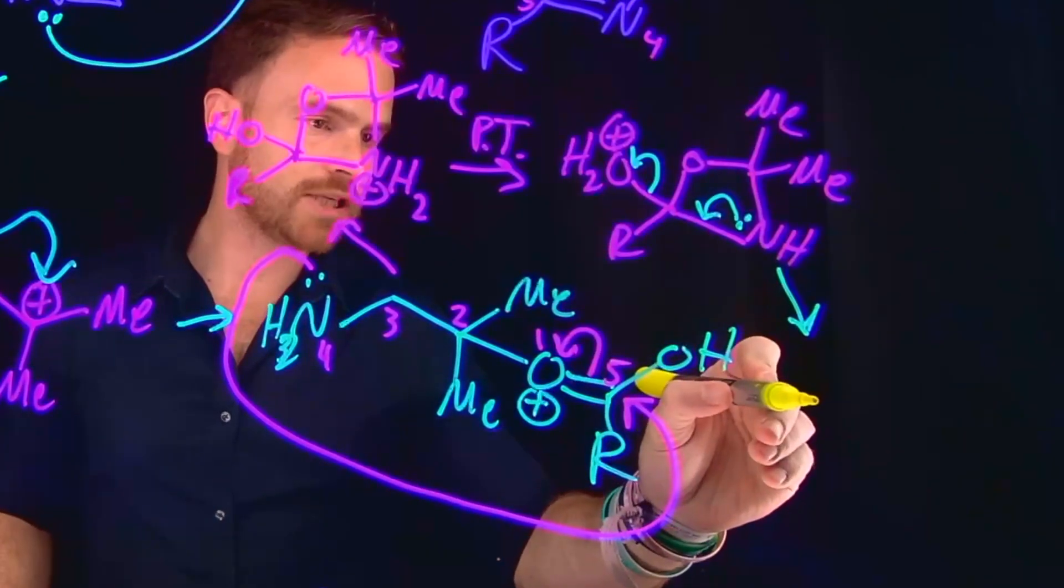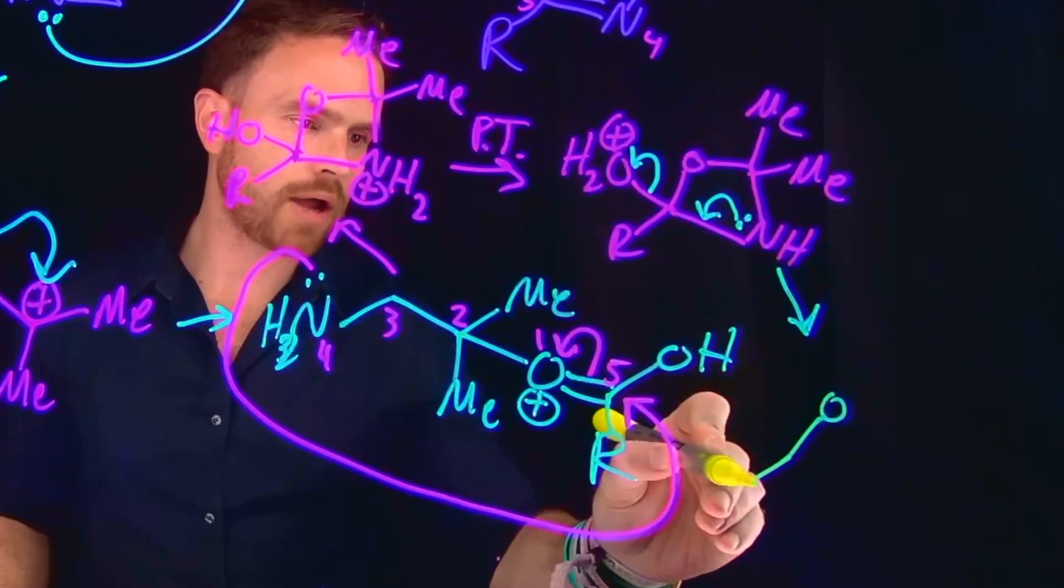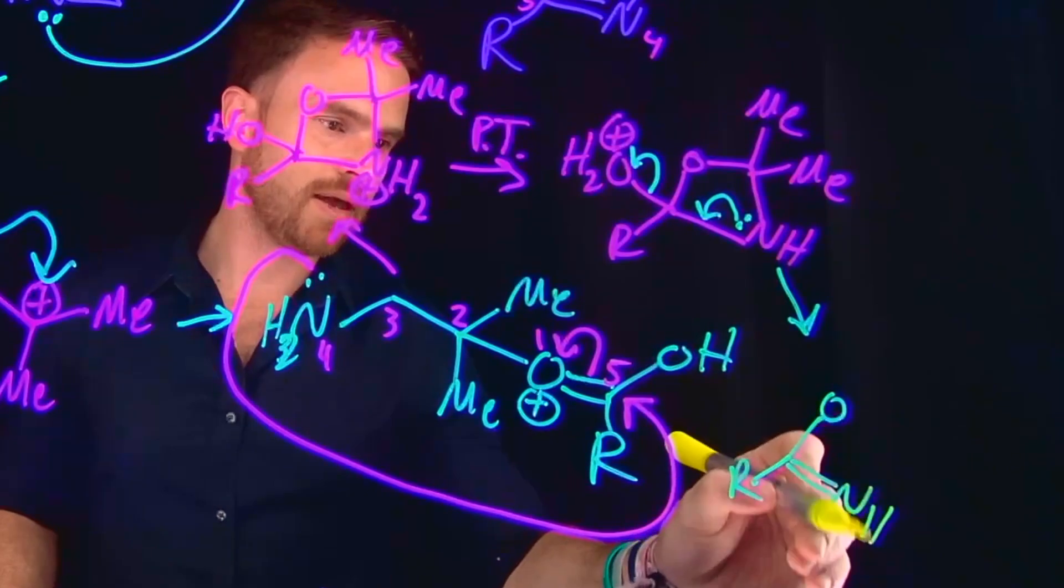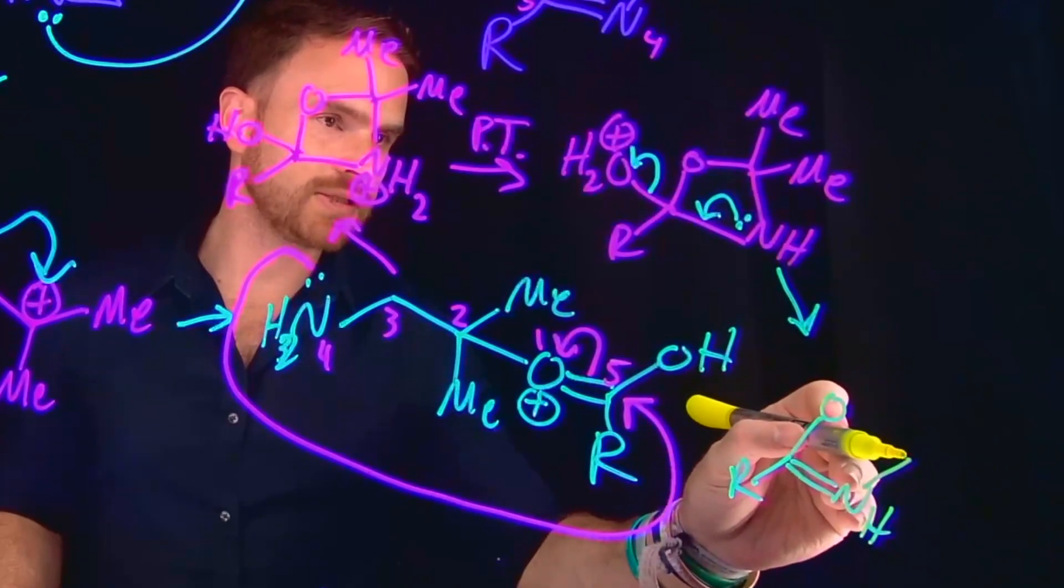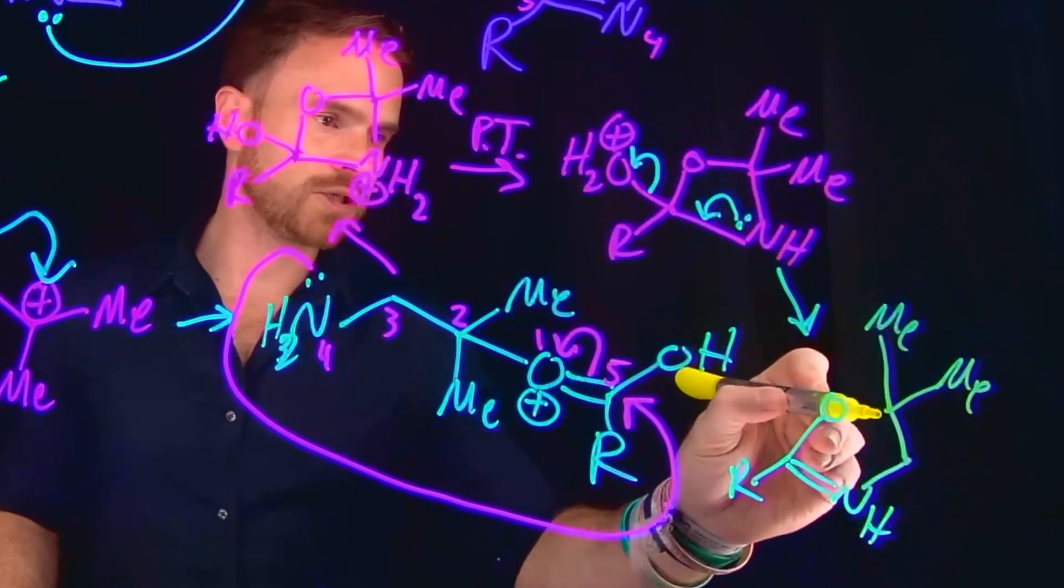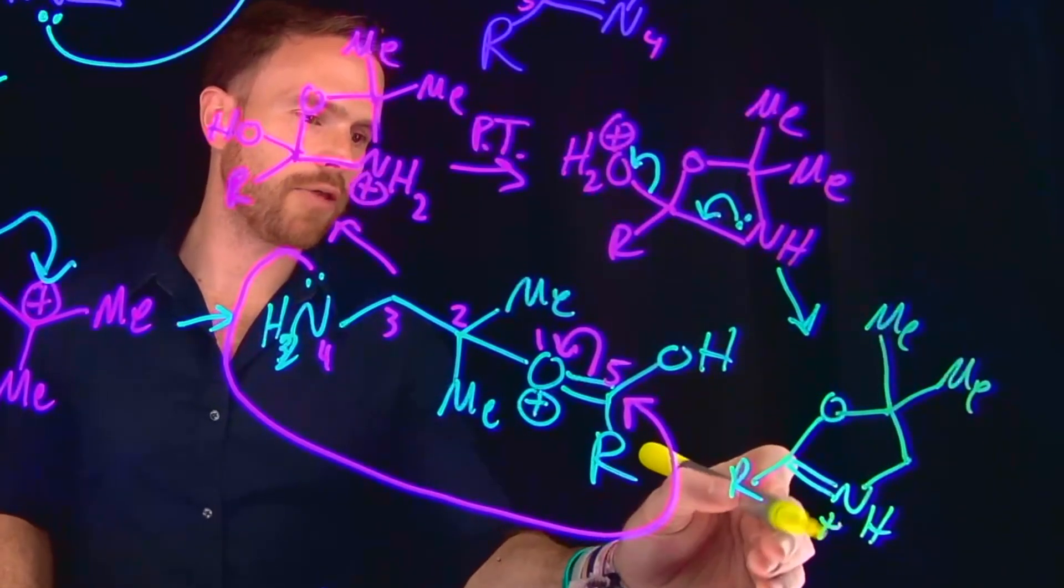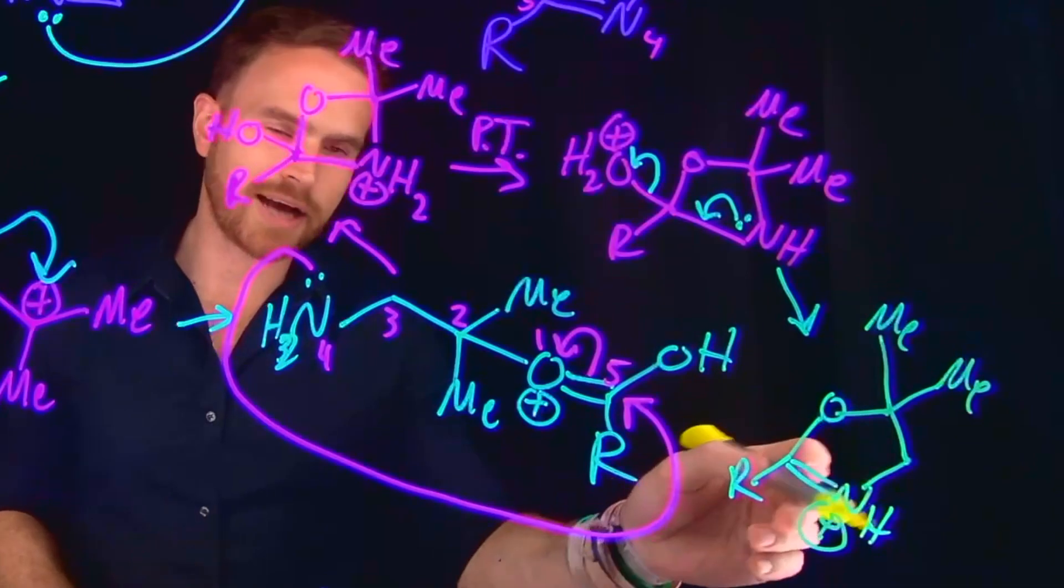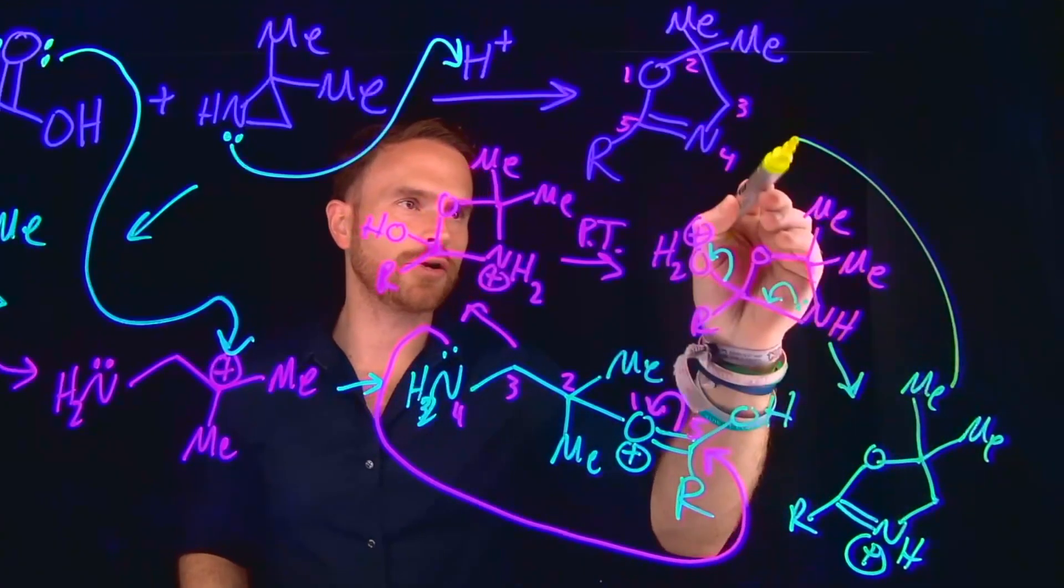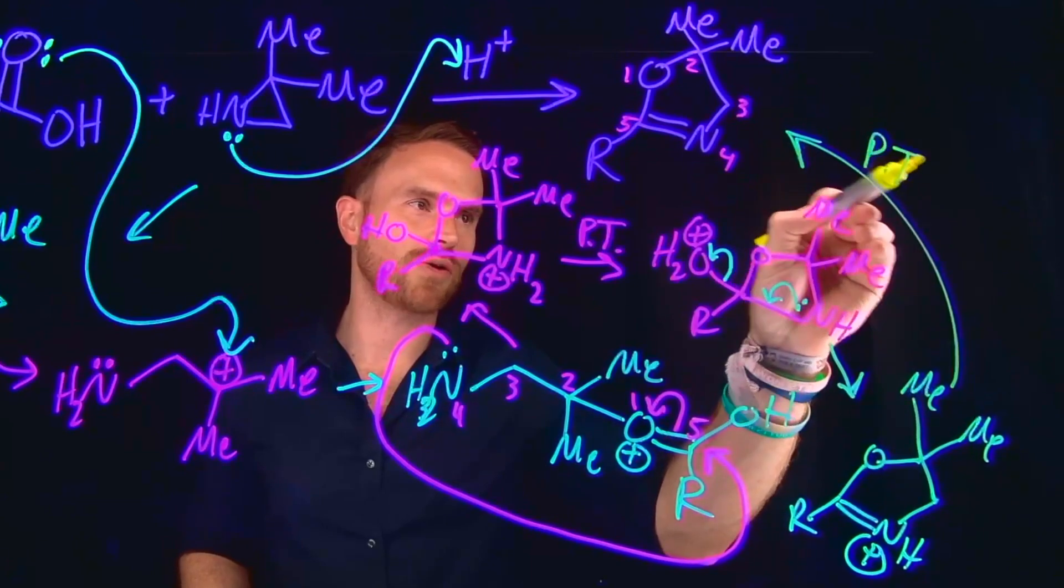So the product of this transformation will be mostly towards our final product, except for the fact that now, since we have made this nitrogen have four bonds to it, this is going to mean that it is going to be positively charged, which means that we need to undergo another proton transfer where this hydrogen can be removed from anything that's swimming around in our reaction to undergo that proton transfer and give us our final product.